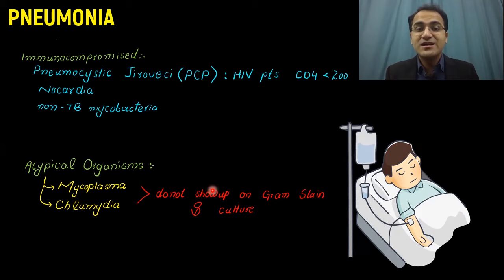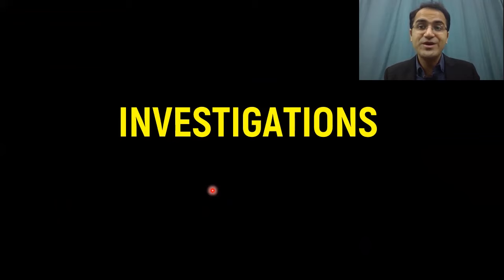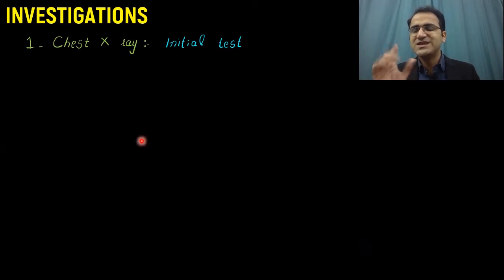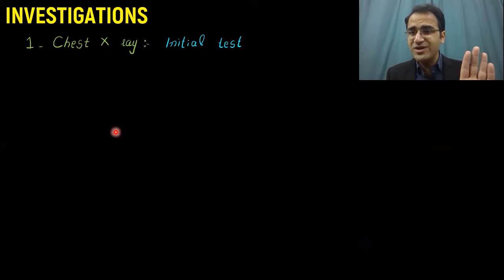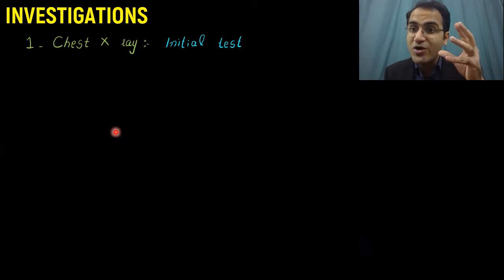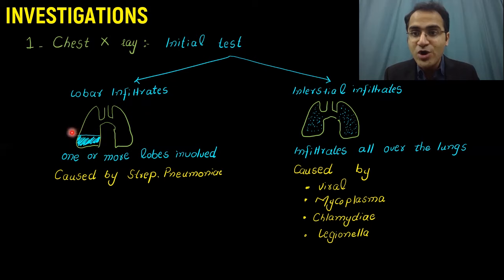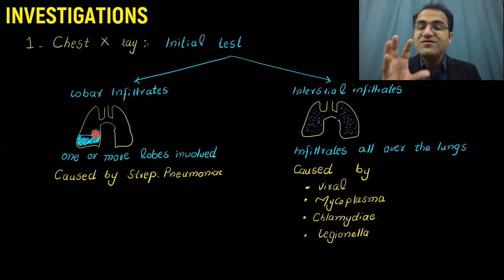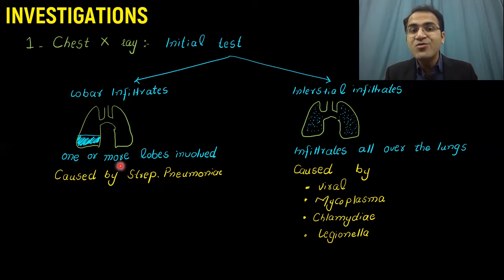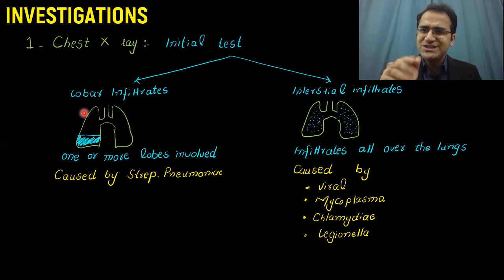In a patient with pneumonia, the first and foremost investigation is a chest x-ray. It tells you about the severity, the type of pneumonia, and gives a hint about the causative organism. A chest x-ray can show two types of picture. The first is lobar infiltrates, meaning one or more lobes of the lungs are affected. Lobar infiltrates are most likely caused by Strep pneumoniae — so if you see lobar infiltrates, your mind should go towards Strep pneumoniae.